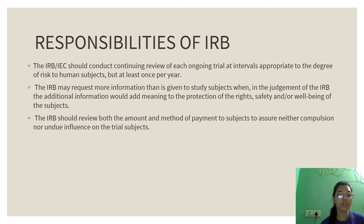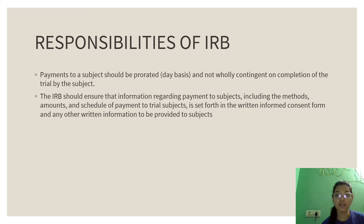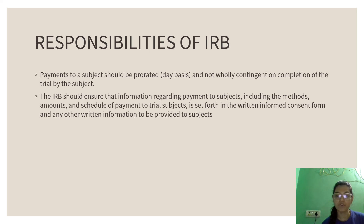The IRB may request more information than is given to study subjects when, in the judgment of the IRB, the additional information would add to the protection of the rights, safety, or well-being of the subject. The IRB should review both the amount and method of payment to subjects to ensure neither compulsion nor undue influence on trial subjects. Payment to a subject should be prorated on a daily basis and not contingent only on completion of the trial. The IRB should ensure that information regarding payment, including methods, amounts, and schedule of payments, is set forth in the written informed consent form or other written information provided to subjects.